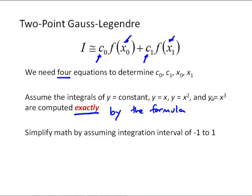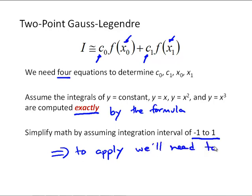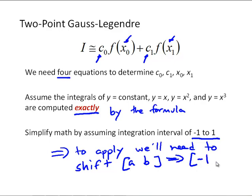We're also going to simplify the math by assuming the integration happens over an interval of negative one to one. This means that when we apply this, we'll need to shift whatever our actual integration range a to b is to the range negative one to one. We'll talk about how to do that in a minute, but first let's look at how we solve for these constants.